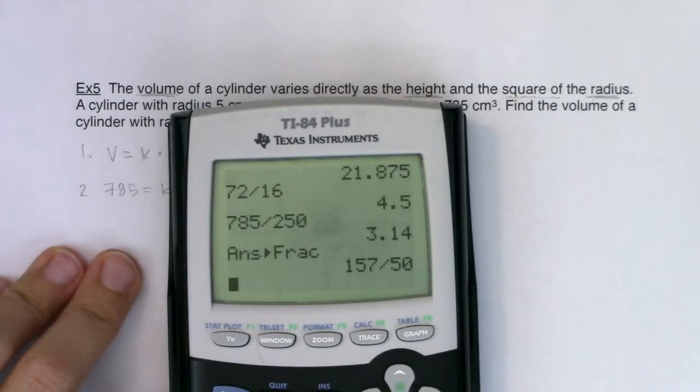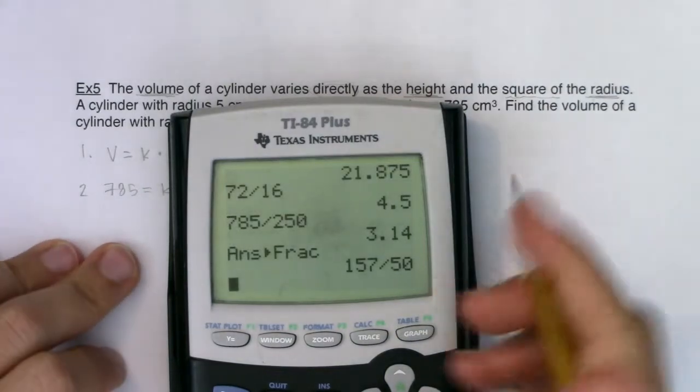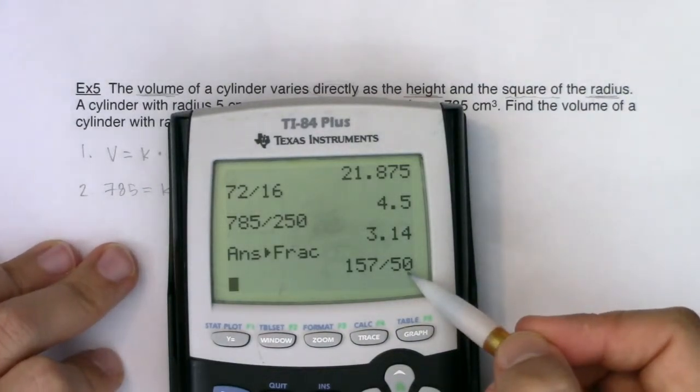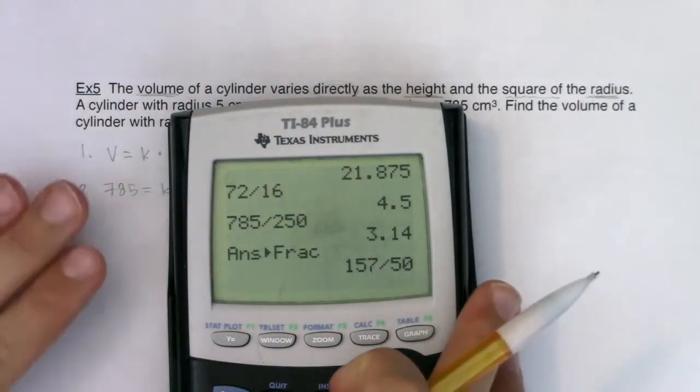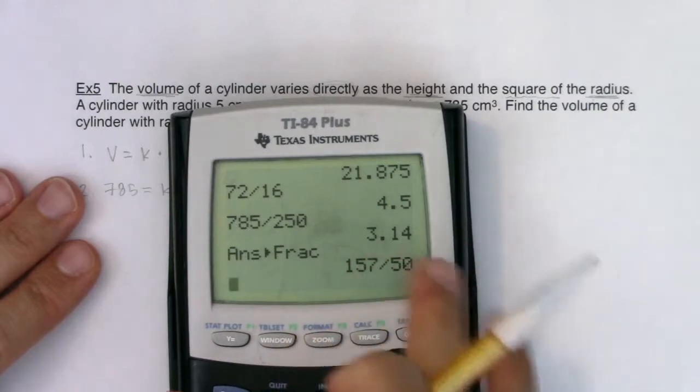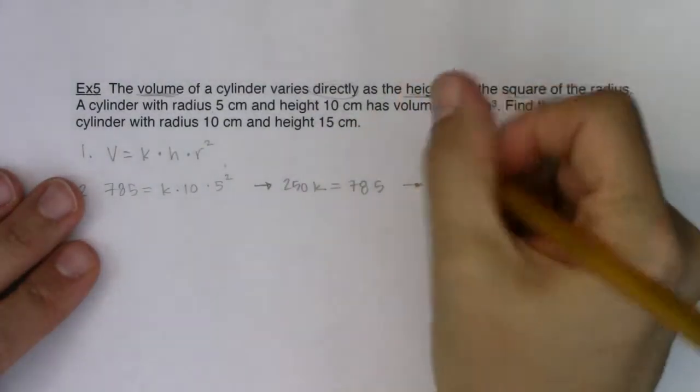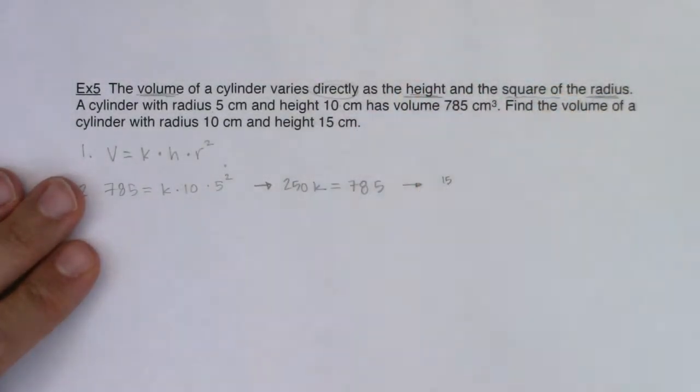Let me get my calculator out and we will do 785 divided by 250. I'm going to turn that into a fraction. It looks like it was 157 over 50. I'm going to stay with fractions.